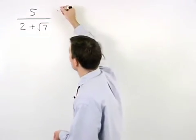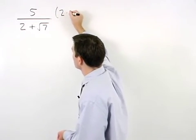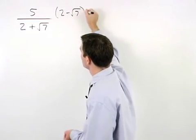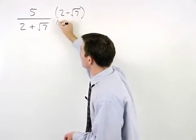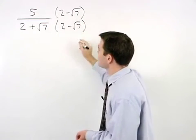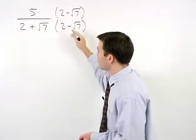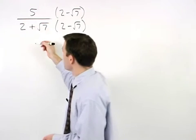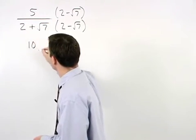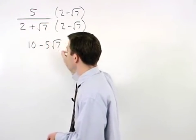So here we multiply top and bottom of the fraction by 2 minus root 7. Distributing in the numerator, we have 10 minus 5 root 7.